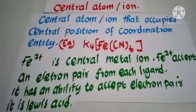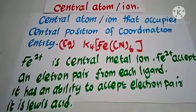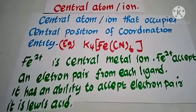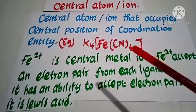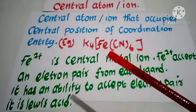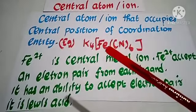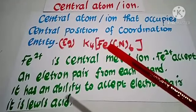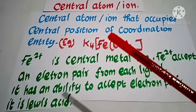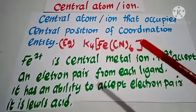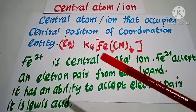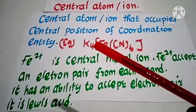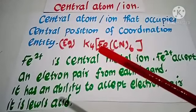Central atom or ion occupies the central position of the coordination entity. For example, in K4Fe(CN)6, potassium ferrocyanide, the part enclosed in the square bracket is the coordination entity. K4 outside is the coordination sphere.